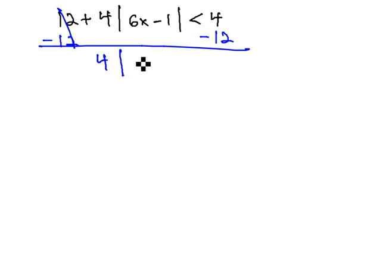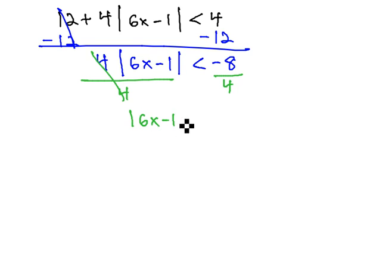This gives us 4 times the absolute value of 6x minus 1 is less than negative 8. Finally, to get the absolute value alone, we'll divide both sides by 4. As we do, we get the absolute value of 6x minus 1 is less than negative 2.